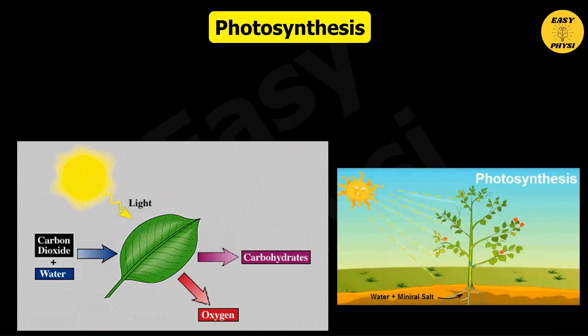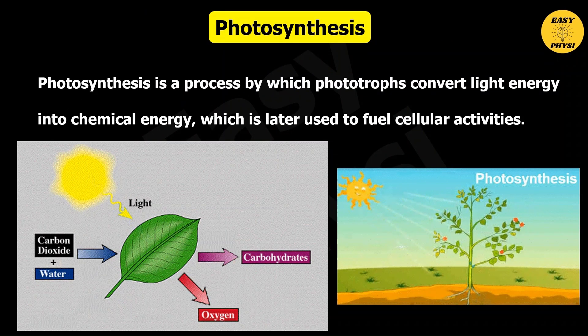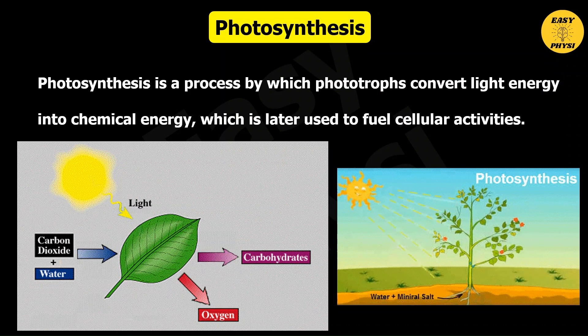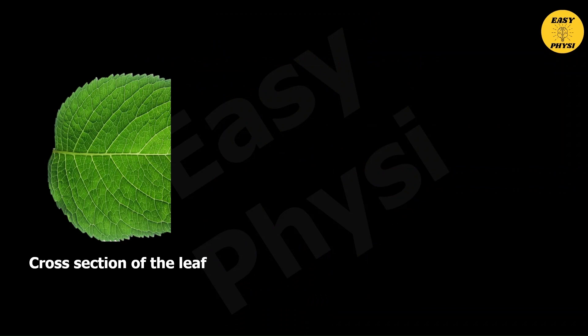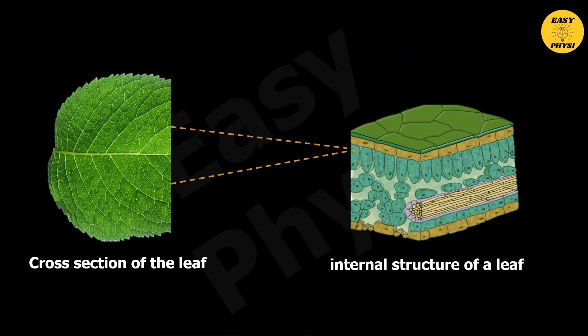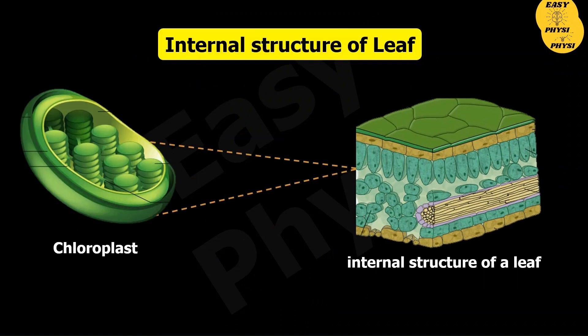Photosynthesis is a process by which phototropes convert light energy into chemical energy, which is later used to fuel cellular activities. Photosynthesis takes place inside the leaf. If we look at the cross section of any leaf under a microscope, we would be able to see this type of leaf structure. These structures where photosynthesis takes place are called chloroplasts.